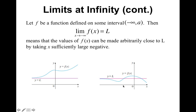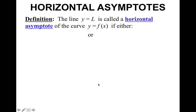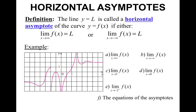This leads to a formal definition of horizontal asymptotes: the line y equals L is called a horizontal asymptote of the curve y equals f of x if either the limit as x approaches infinity of f of x equals L, or the limit as x approaches negative infinity of f of x equals L. Now we're going to do an example. Just by looking at this graph, you should be able to tell me what the vertical and horizontal asymptotes are, and which limit describes each one.